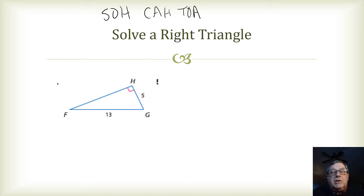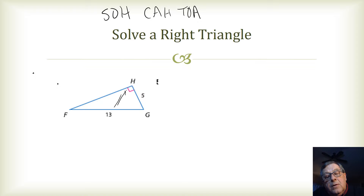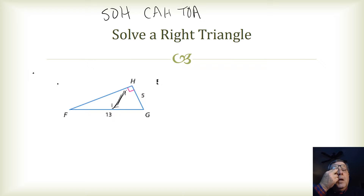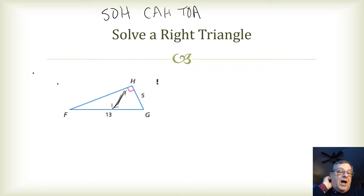I've got two side lengths here and I want to find my hypotenuse. I can see the hypotenuse directly opposite the right angle — it has a measure of 13 — and then I've got a side length of 5.